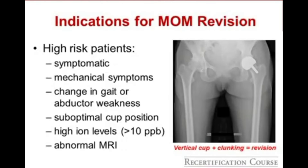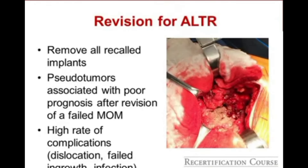Indications for metal-on-metal hip revision include any symptomatic patient, mechanical symptoms, change in gait or abductor weakness, suboptimal cup position, high ion levels over 10 parts per billion, and an abnormal MRI. When revising, remove all recalled implants and debride necrotic soft tissue. Revision of metal-on-metal hips is associated with high complication rates including dislocation, failed bony ingrowth, and infection.